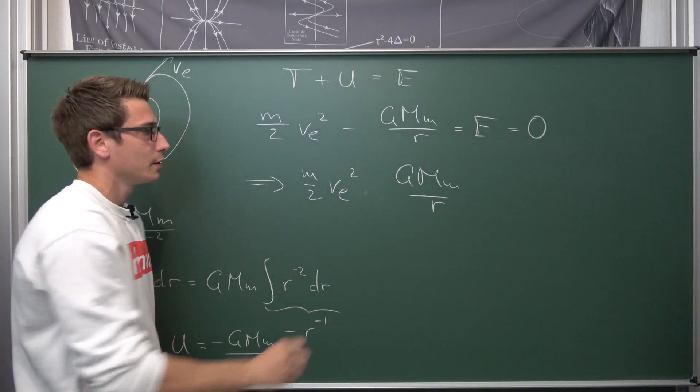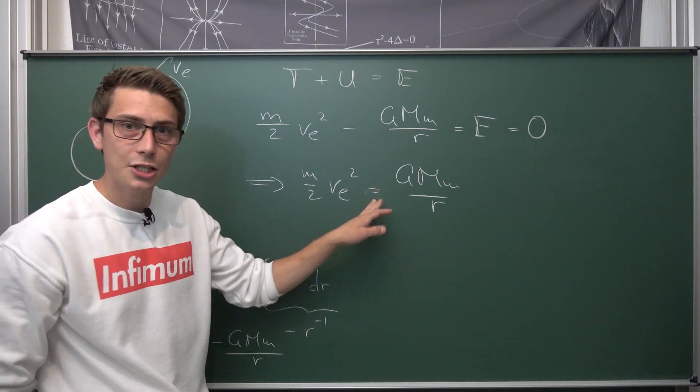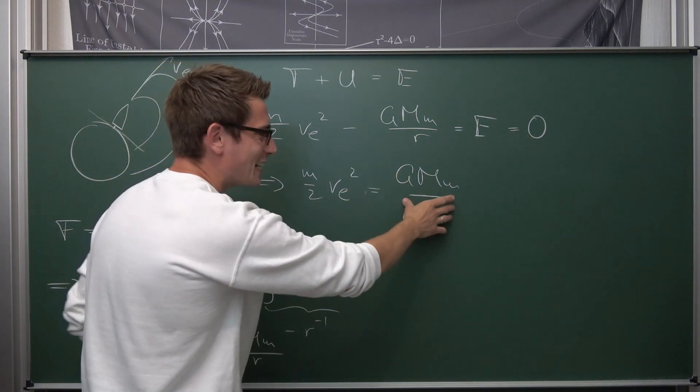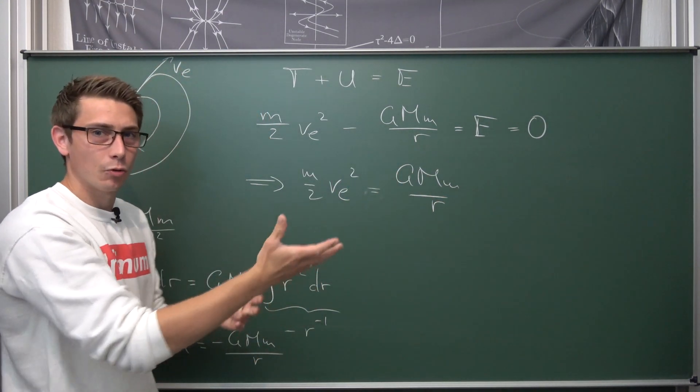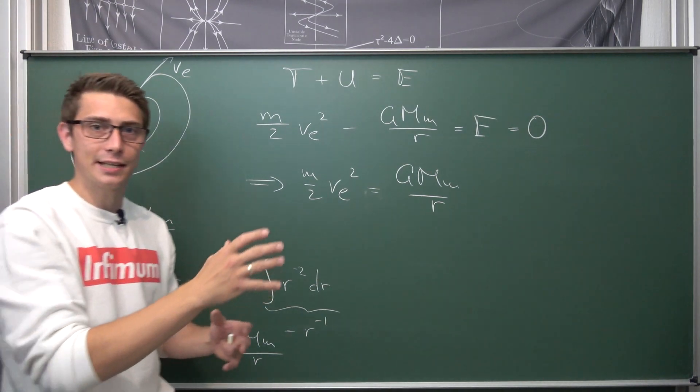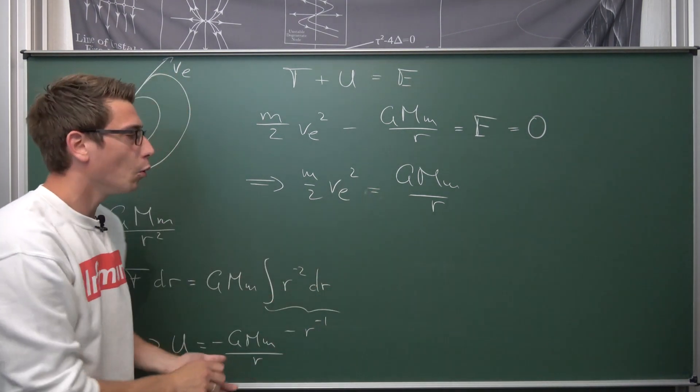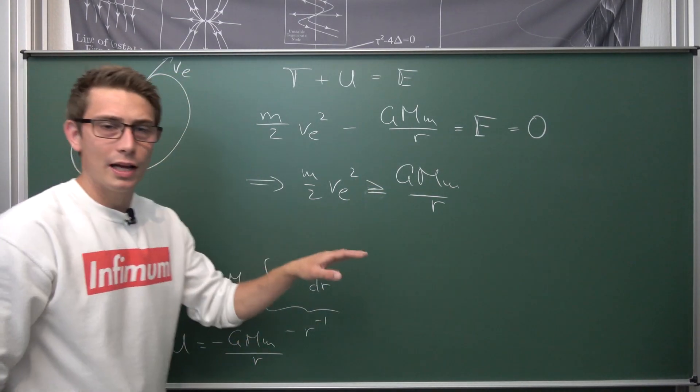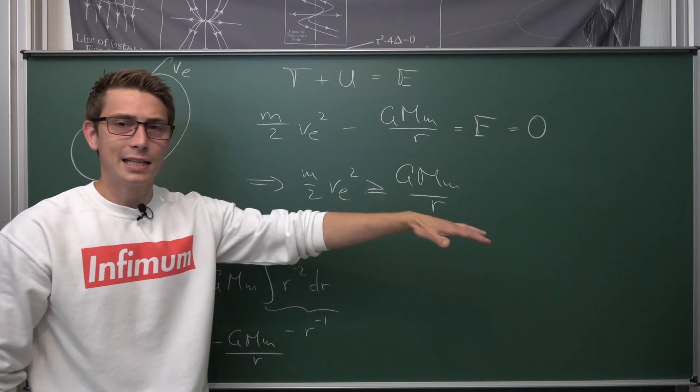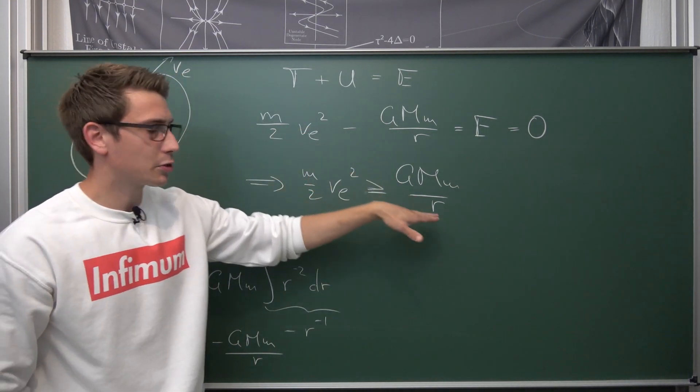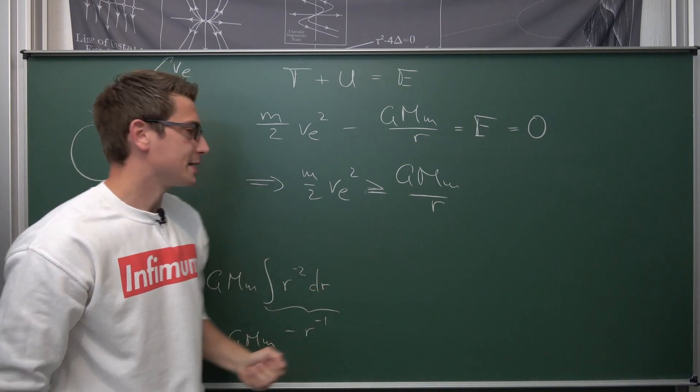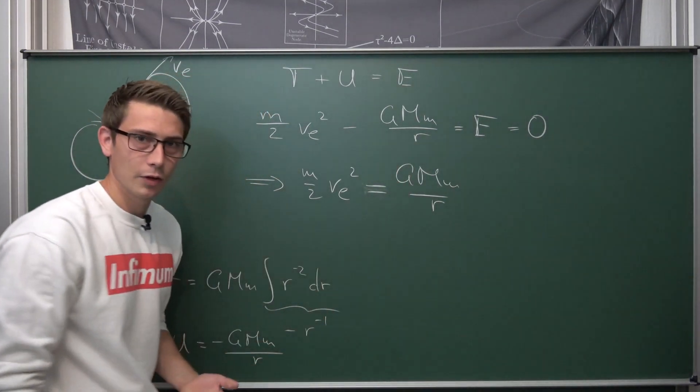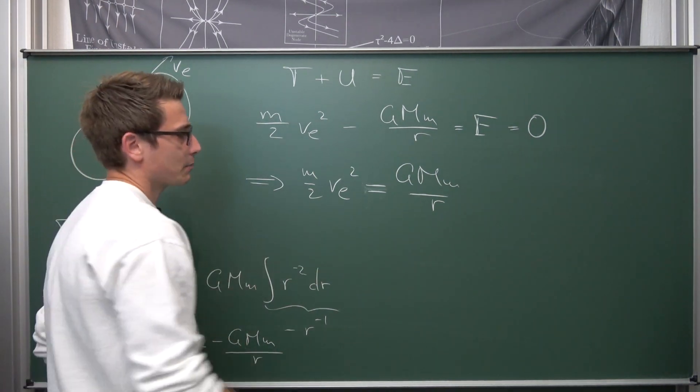Now what we need is we either need this equivalence relation, that both are equal, meaning we are just going to barely escape the gravitational force or the gravitational potential that our Earth is going to put onto our rocket, or we can even be bigger than that. Okay, both relationship holds. As long as our escape velocity is basically bigger than what the gravitational attraction is going to be, then we are basically good. So we can for simplification purposes just take a look at the equivalence relation right here and now solve for our escape velocity.